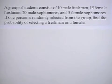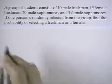A group of students consists of 10 male freshmen, 15 female freshmen, 20 male sophomores, and 5 female sophomores. If one person is randomly selected from the group, find the probability of selecting a freshman or a female.